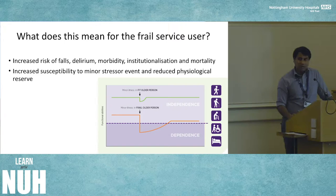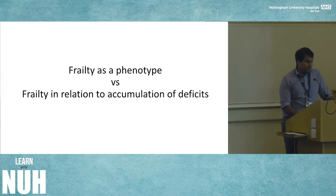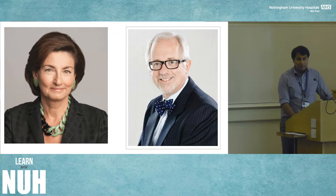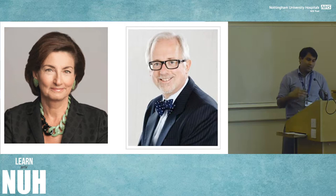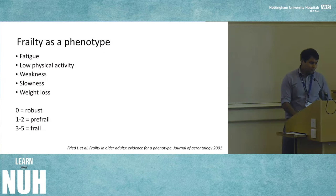That's a really powerful way to illustrate what frailty means for the person in front of you. The two theoretical models are frailty as a phenotype and the accumulation of deficits model, proposed respectively by Linda Fried — an American geriatrician and epidemiologist — and Kenneth Rockwood — a Canadian geriatrician and neurologist who developed the accumulation deficit model.